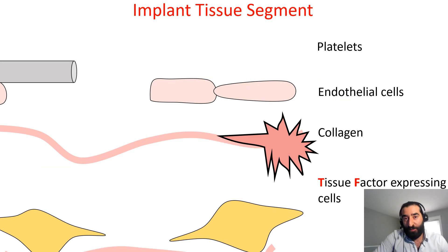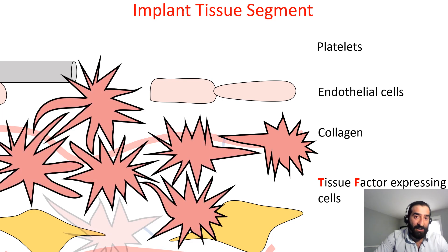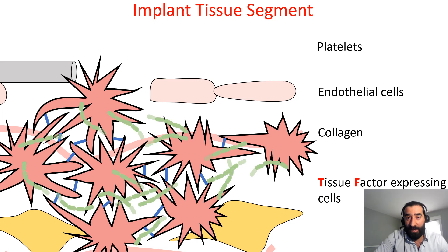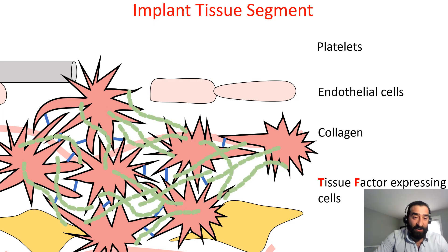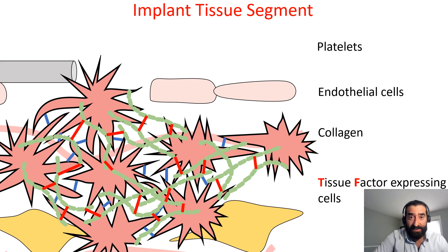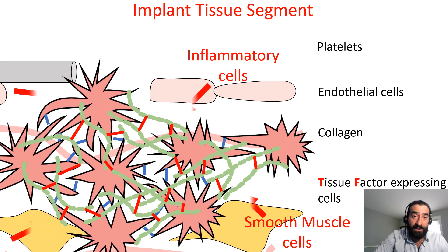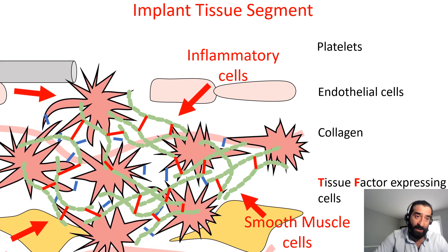It is important to appreciate that the network of activated platelets that materializes at the site, along with the matrix of fibrin chains that get cross-linked, do not occur in a vacuum. They are influenced by the blood flow patterns, shear stress, and the anatomy and physiology of the tissue segment. The clot itself, as it contracts and produces growth factors, serves as a provisional matrix for the inflammatory cells and smooth muscle cells that will influence the healing profile and coverage of the implant.